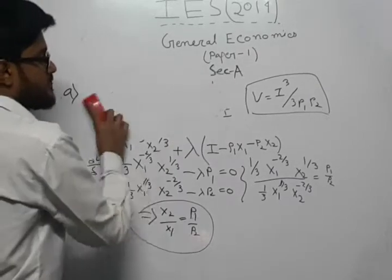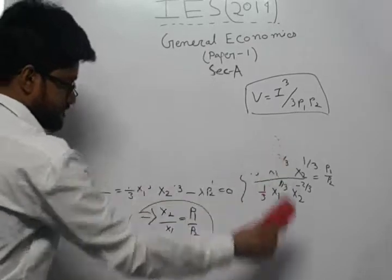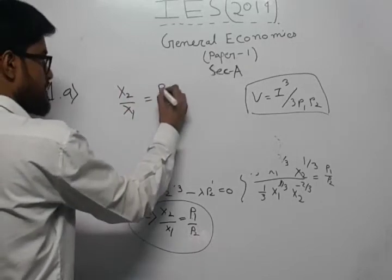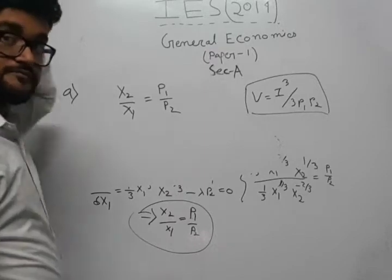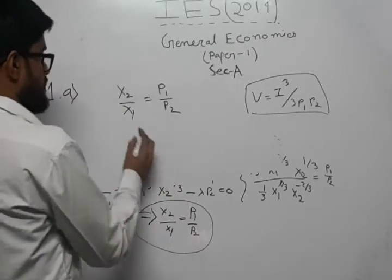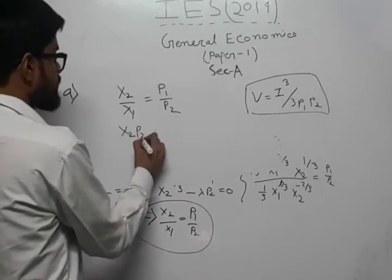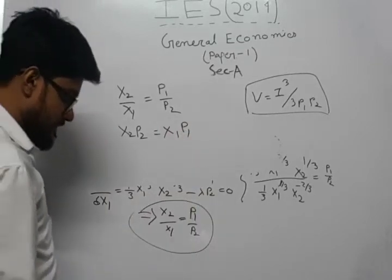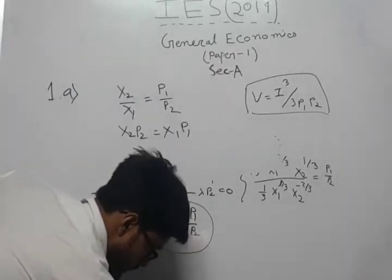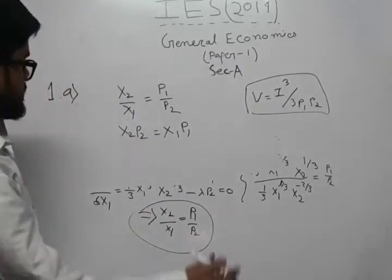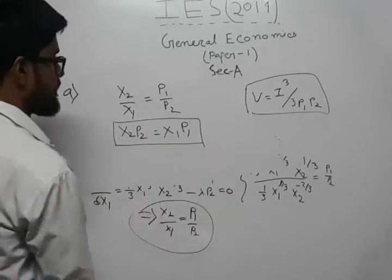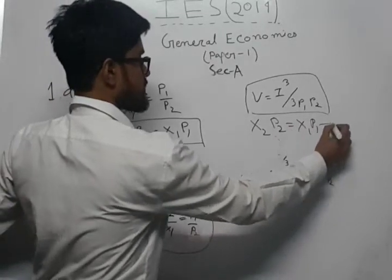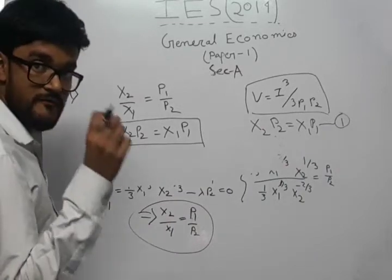From x2/x1 = p1/p2, we can rearrange to get x2·p2 equals x1·p1. We will label this as equation number 1, since it is needed to find the values of x1 and x2.